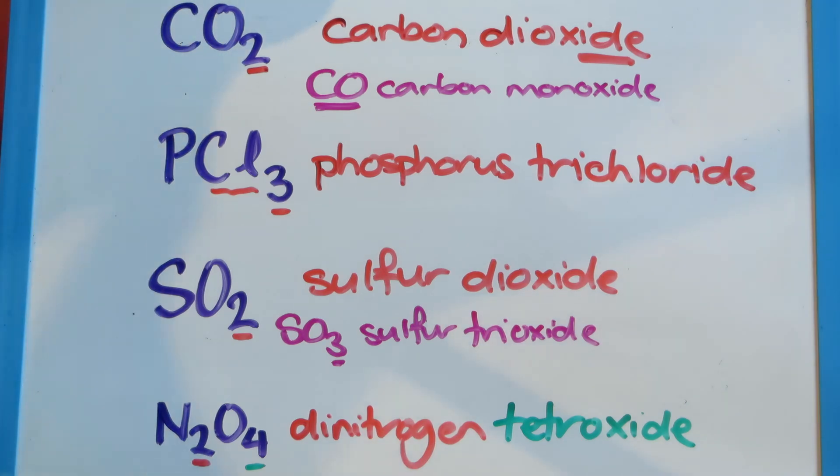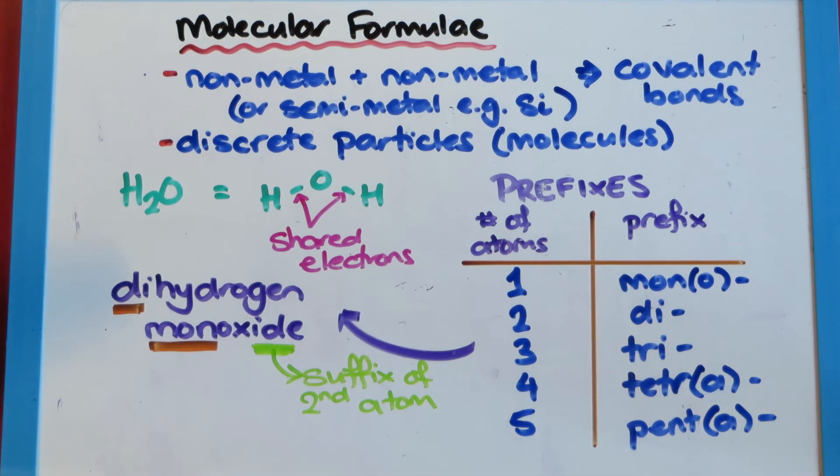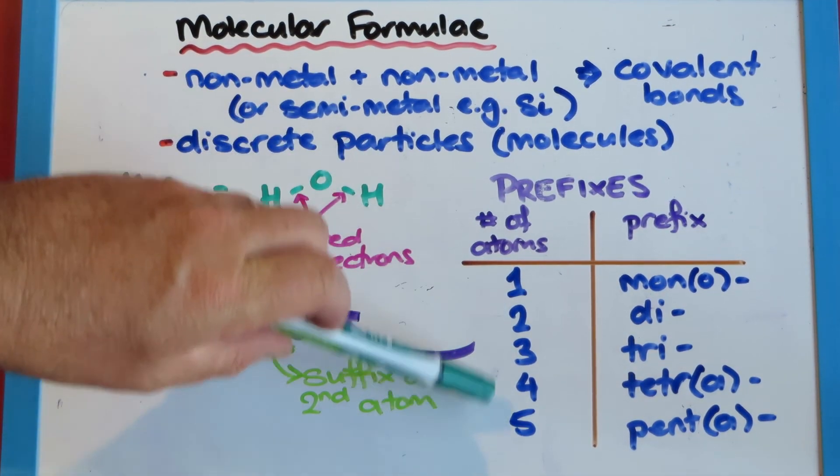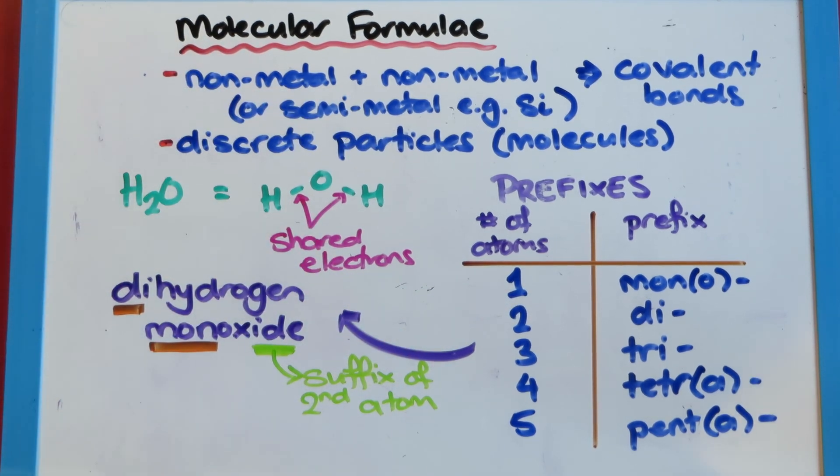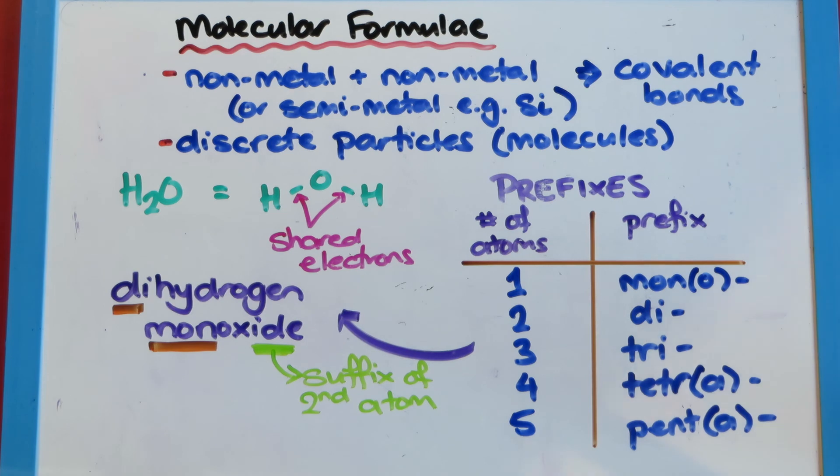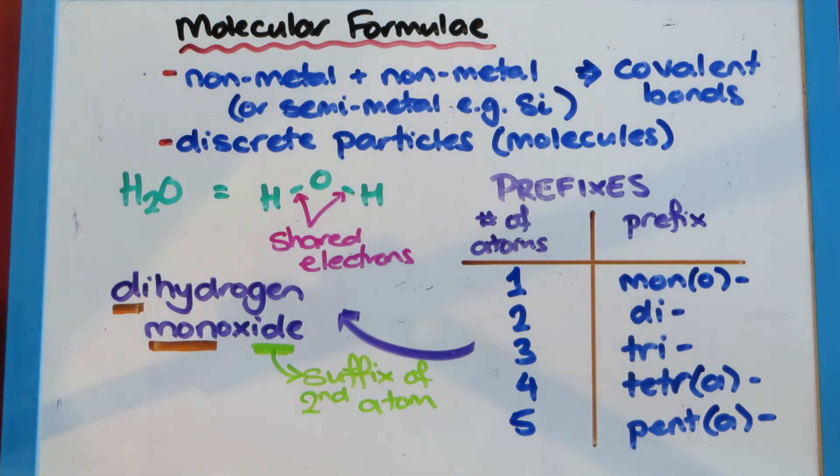So that's how we name molecules. Just a reminder that we just need to remember some prefixes for the numbers of atoms. And we need to change the suffix of the second atom to ide. And we've got its systematic name. And this only is for things where it's non-metal with non-metal or semi-metals like silicon.